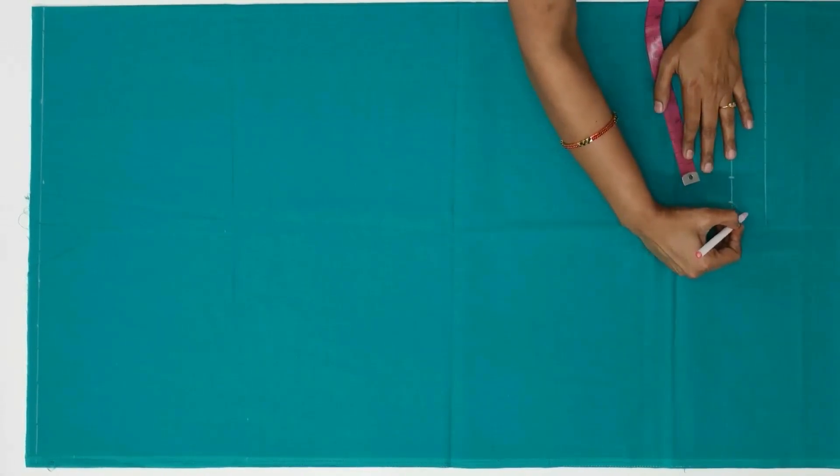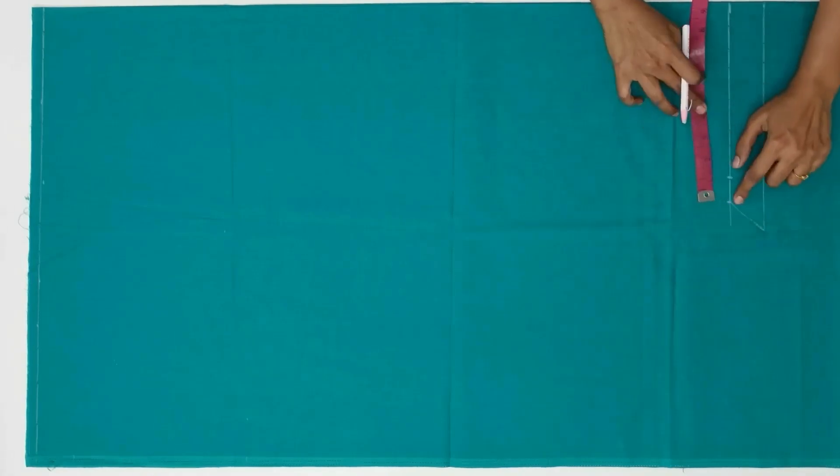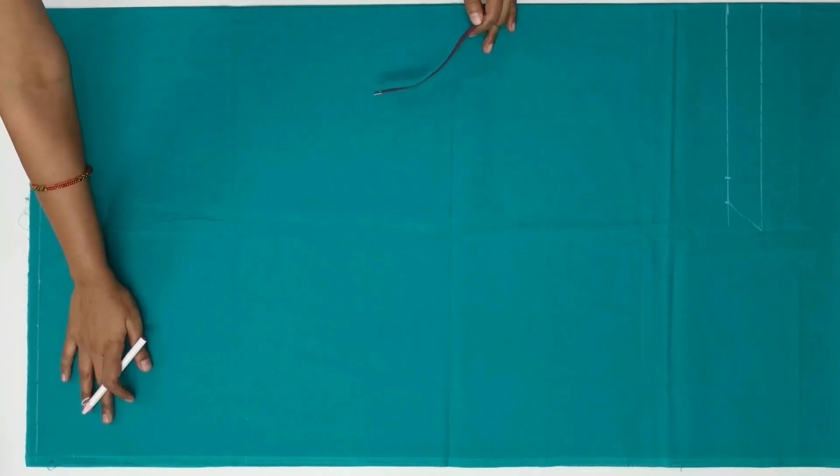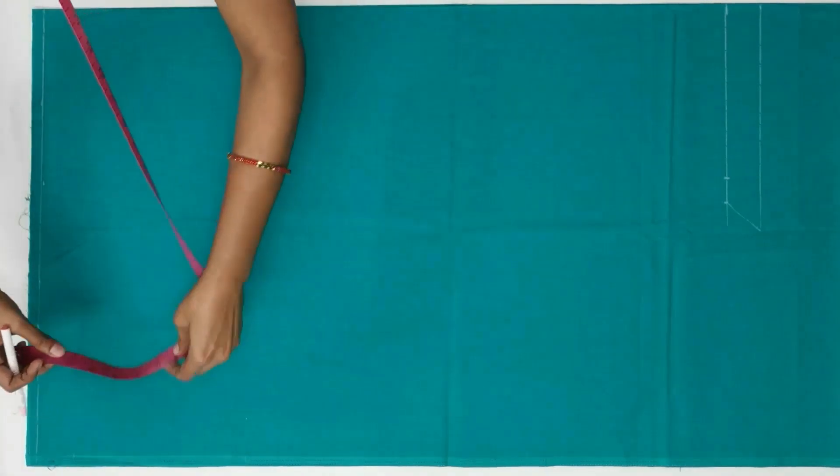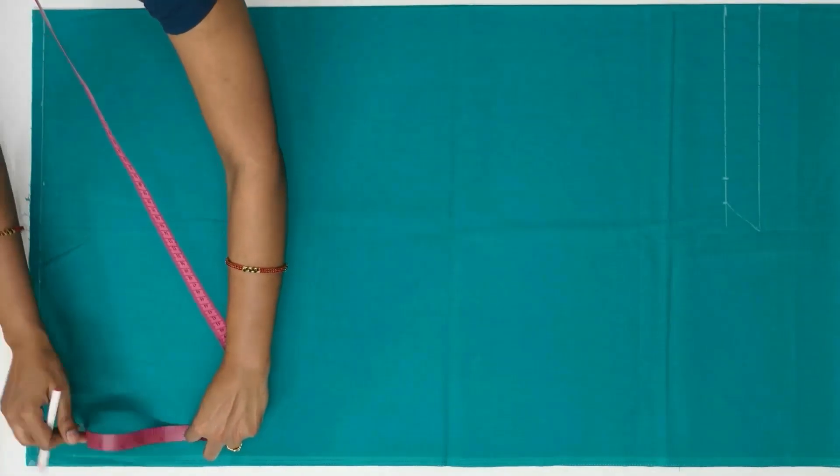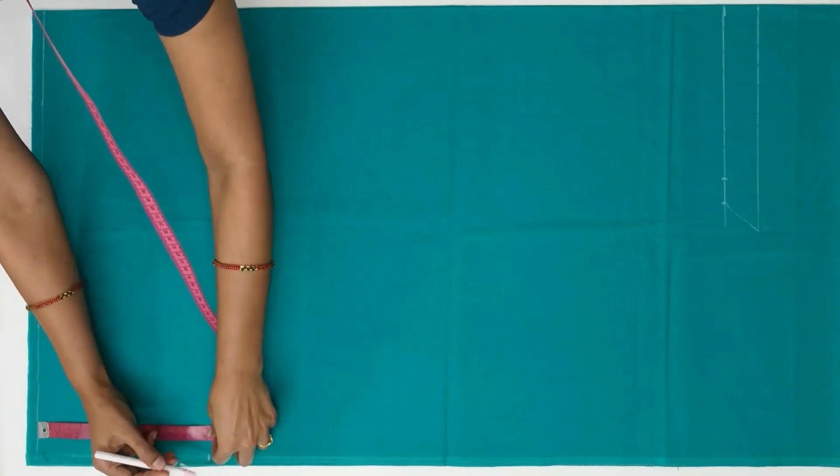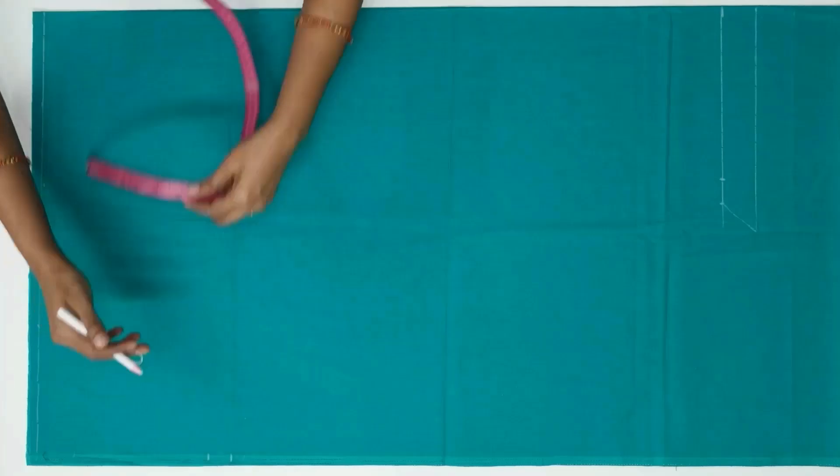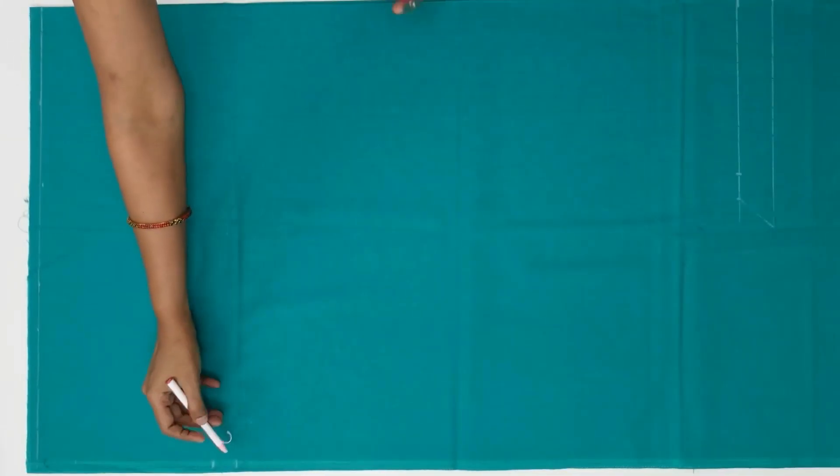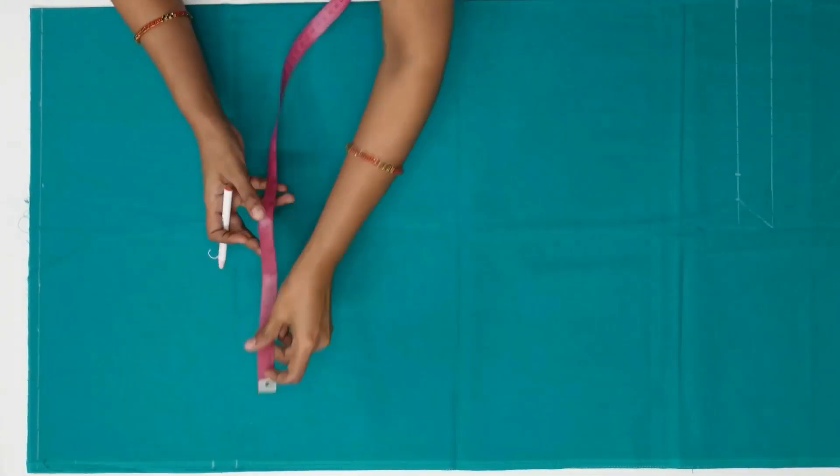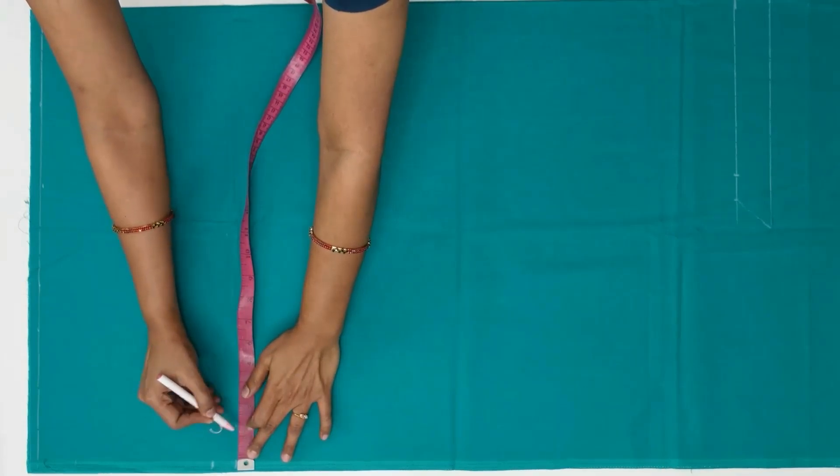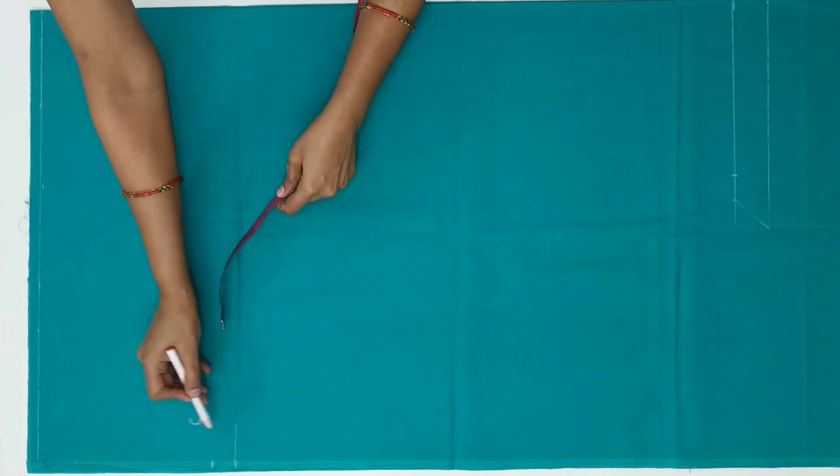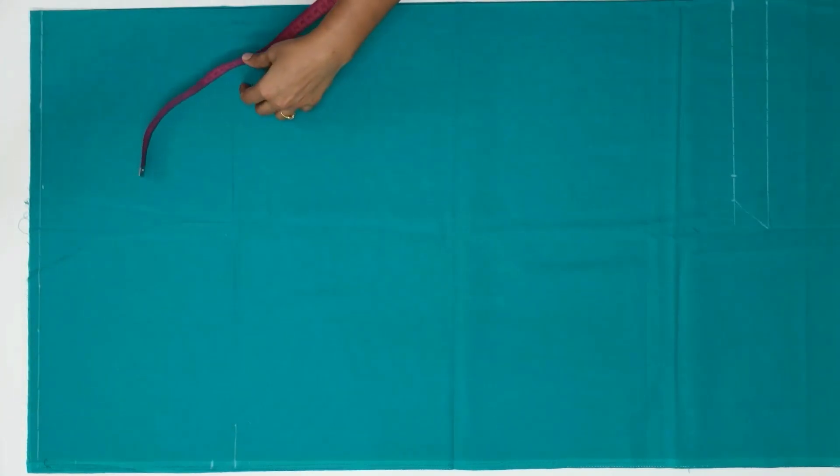Now I am marking 8 inch here. And again leaving 1 inch for seam allowance. So mark 2 inch inwards. Make a line and from here draw the straight line.